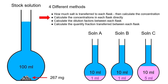The second route uses the C1V1 equals C2V2 method to calculate the concentration in each of the flasks directly. The last two methods are the ones I actually use far more in practice. The third method uses the dilution factors approach to calculate the concentration in the final flask. The last method is perhaps the most intuitive — that's to calculate the quantity fraction transferred between each flask in order to calculate the concentration in the final flask. We're going to step through each one of these in turn.